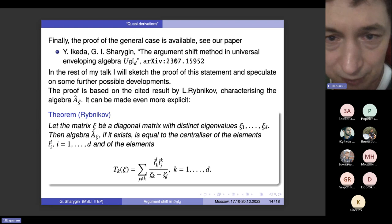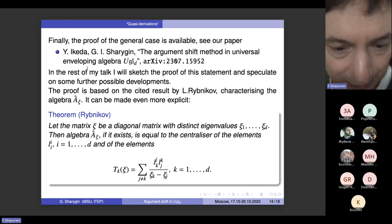And actually, last year I managed to prove that this holds for the generators of the first type. Now here is the proof of the general case. It has been published in the archive, and actually it has been recently accepted for publication in the Journal of Geometry and Physics. So this result holds for all P and Q.